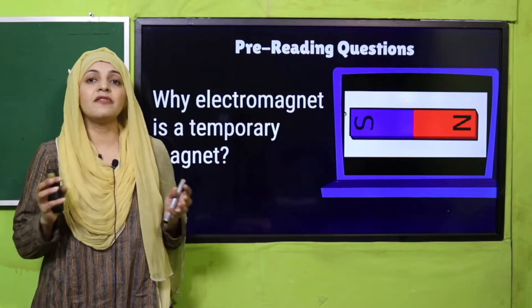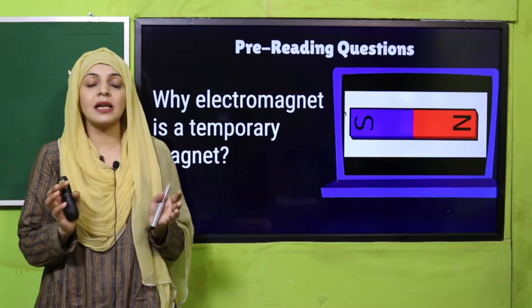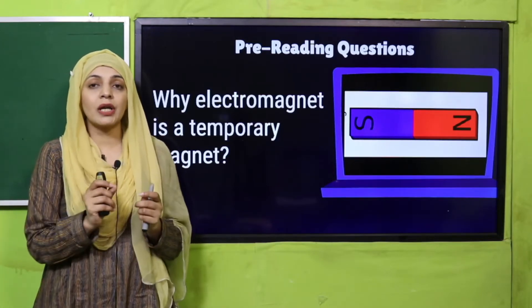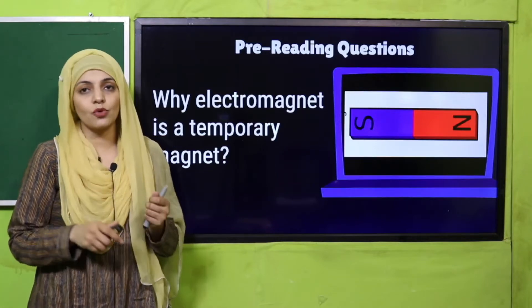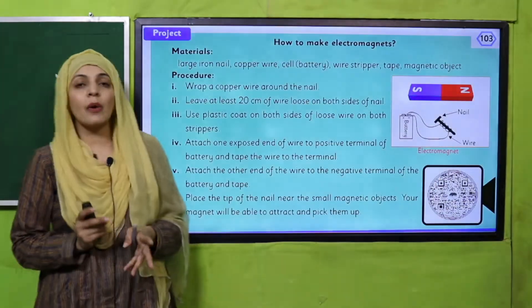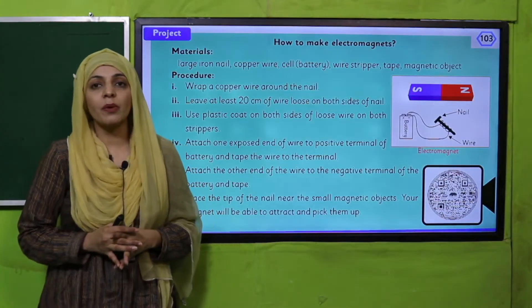they lose their magnetism. The magnetic field is produced by electric current, and when you stop the electric current, the magnetism will also disappear. Okay, my dear students, now I request you all to please open page number 103.